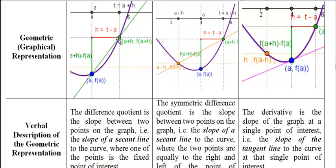Find f of that, a plus h, and that gives you the y value of that green point. So now we have two points. Find the slope between those two points, or in other words, the slope of that green secant line. So the difference quotient is the slope between two points on the graph, in other words, the slope of a secant line to the curve, where one of those points is this blue point right here, which is the fixed point of interest.